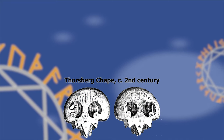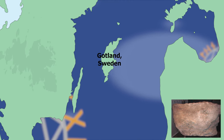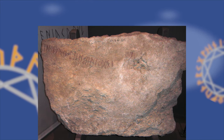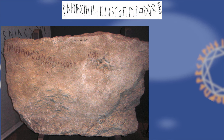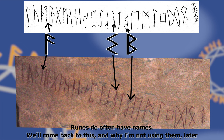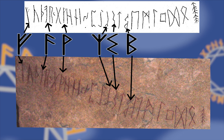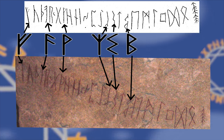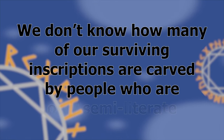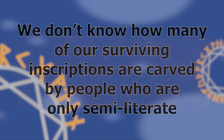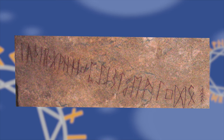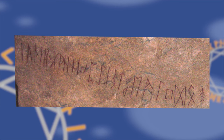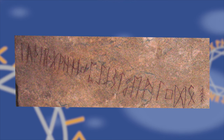Though the earliest inscriptions in the Elder Futhark date from the 2nd century AD, we don't have a runic alphabet — a collection of all known runes — until around 400 AD, on the Kylva Stone, found in Gotland, Sweden. On this, there are all 24 runes of the Elder Futhark. When we compare the Kylva Stone's Futhark to other inscriptions like the Vadstena Bracteate, it has a few oddities: the A, S, and B runes are mirrored, the Z rune appears upside down, and the F and W runes appear incomplete. We don't know how many of our surviving inscriptions are carved by people who are only semi-literate, or people who were feigning literacy to impress.